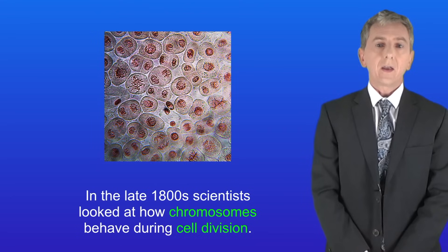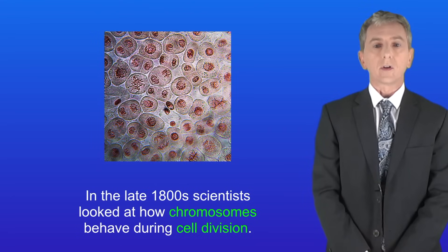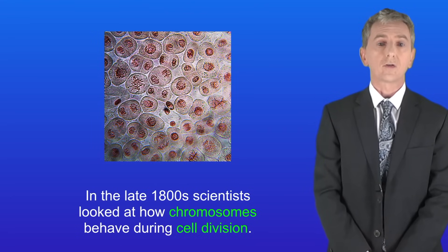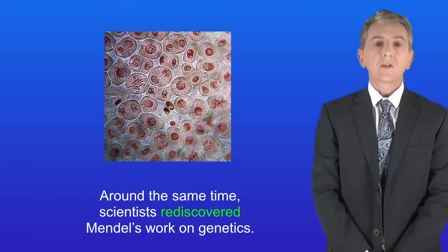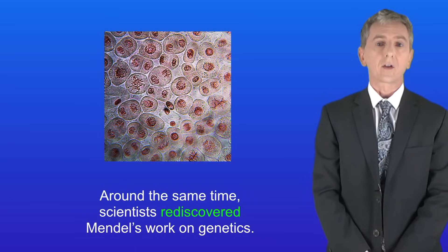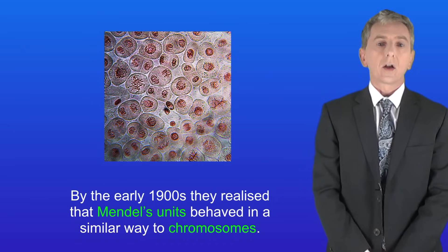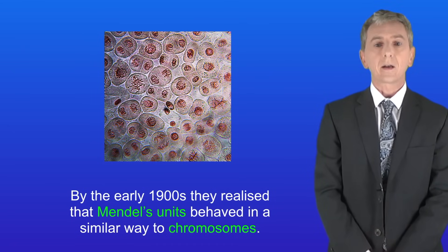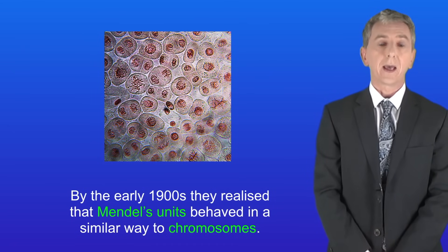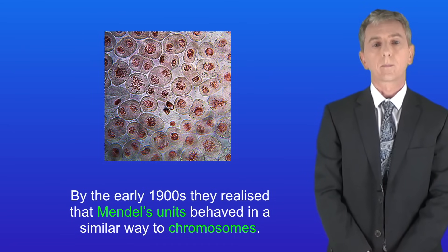In the late 1800s scientists looked at how chromosomes behaved during cell division. Around the same time scientists rediscovered Mendel's work on genetics and by the early 1900s they realised that Mendel's units behaved in a similar way to chromosomes.